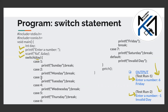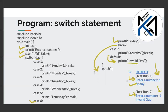We have cases 1 through 6 for each day. Case 6 prints 'Friday' using printf, followed by a break. The program also uses a getch function. If the value does not match any case (like minus 1), the default statement executes and prints 'Invalid Date'.